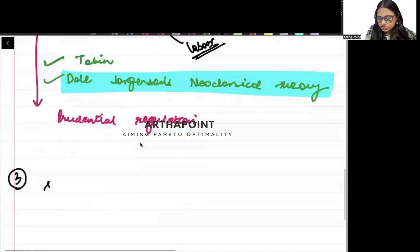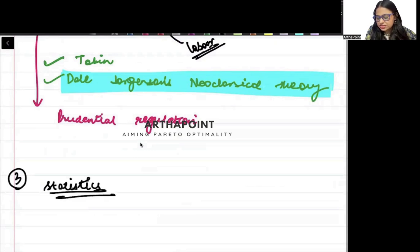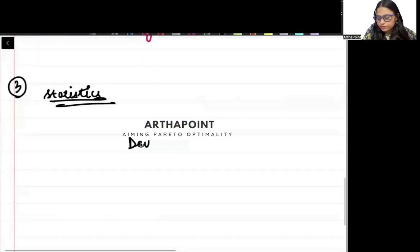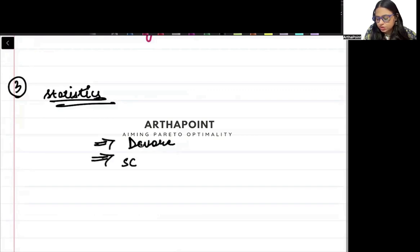Then it comes, the third one is statistics. For stats, you can refer to De Goor and you can refer to S.C. Gupta. These books are majorly enough for you to cover the statistical part and you really don't need anything on top of it.